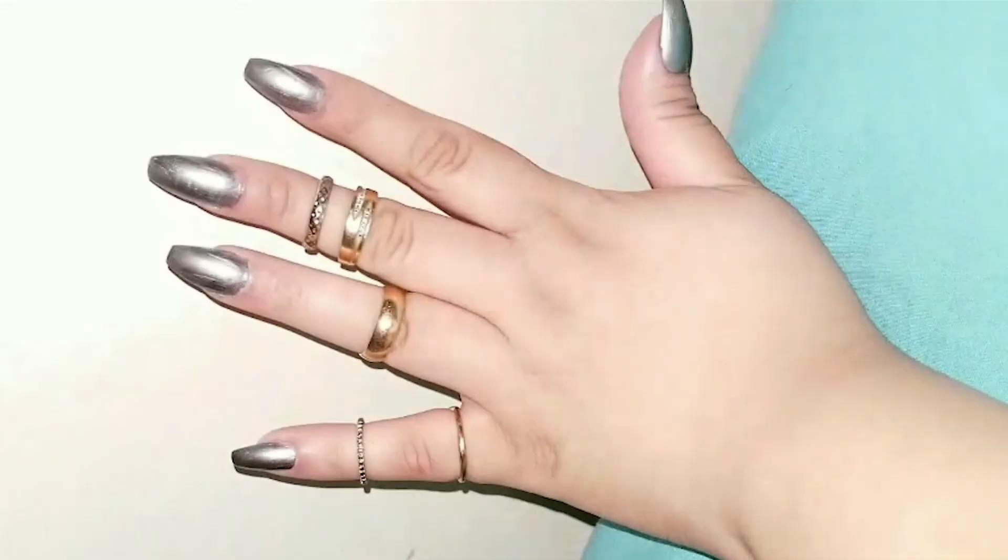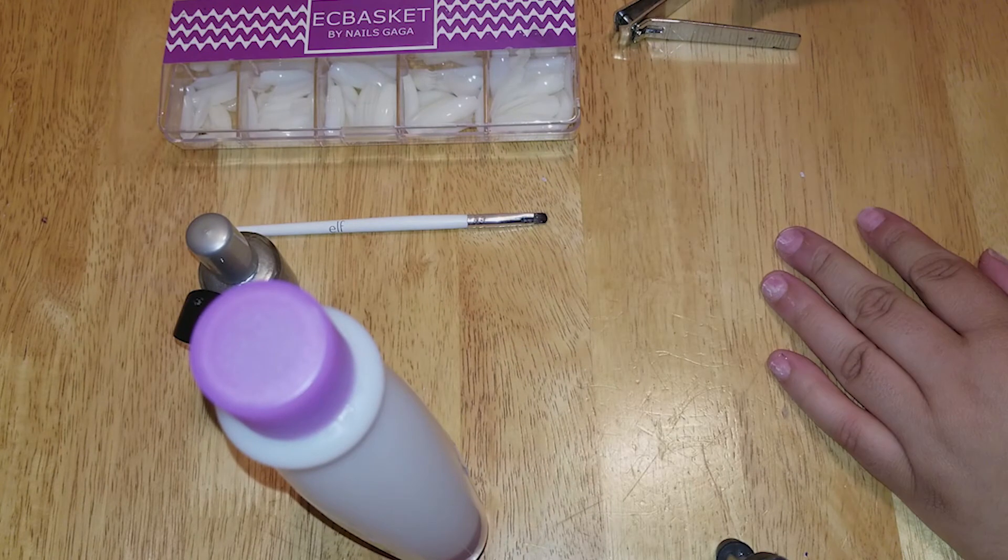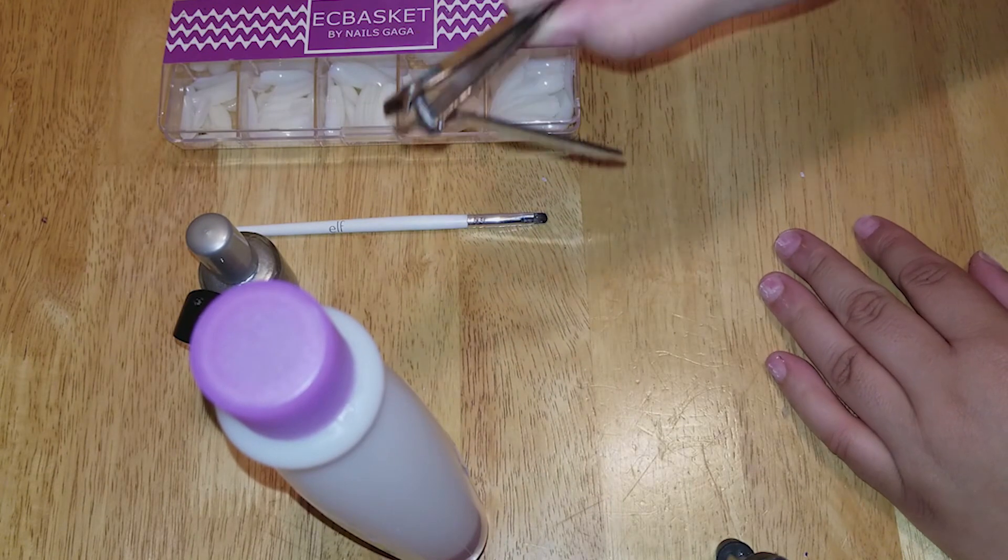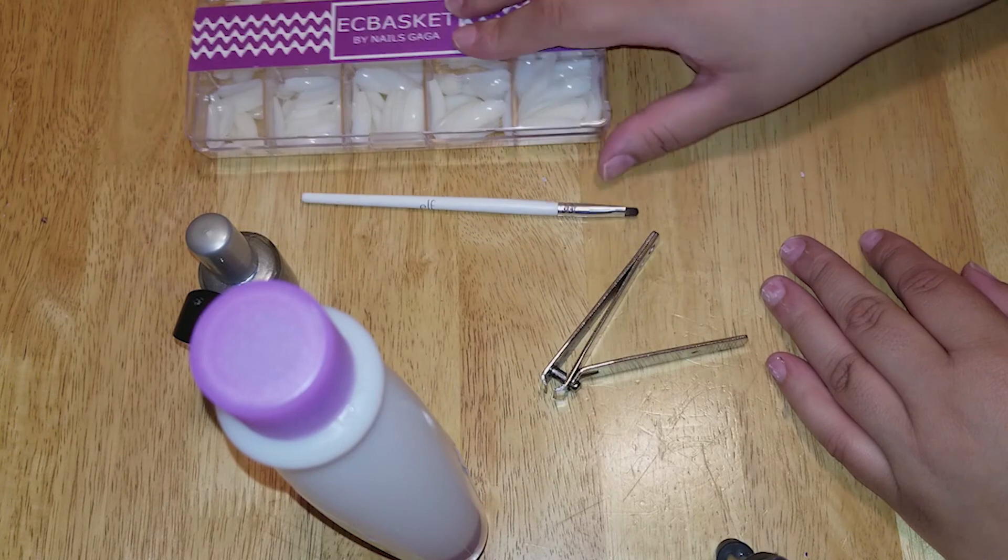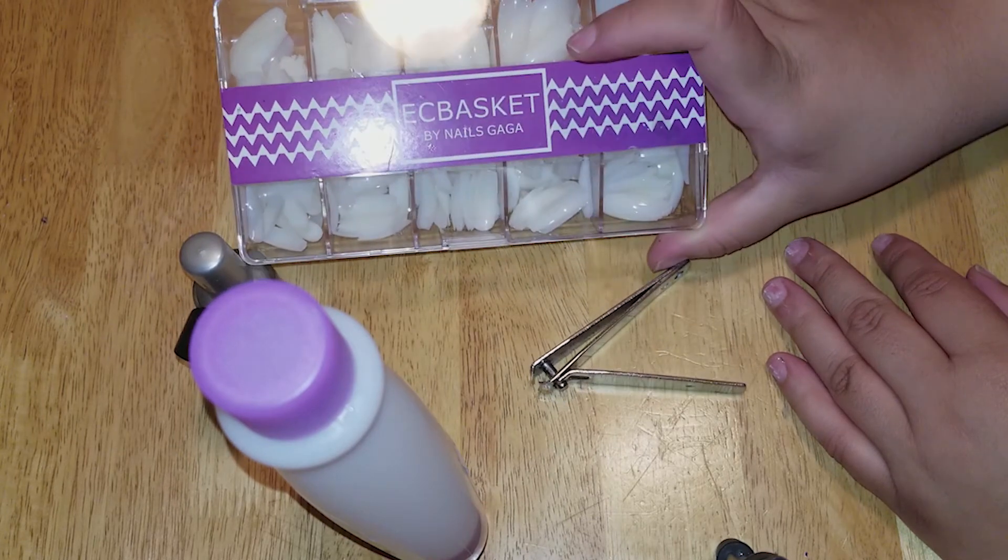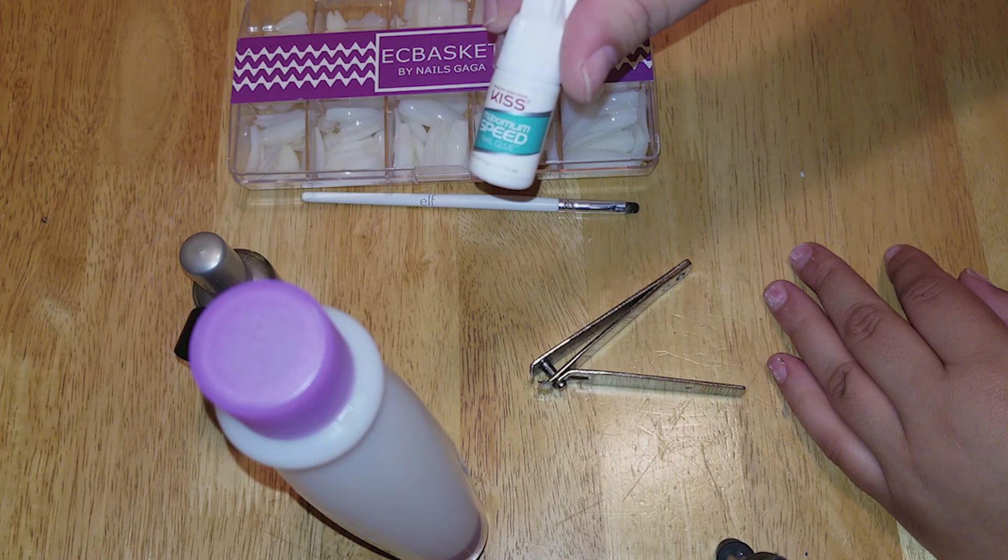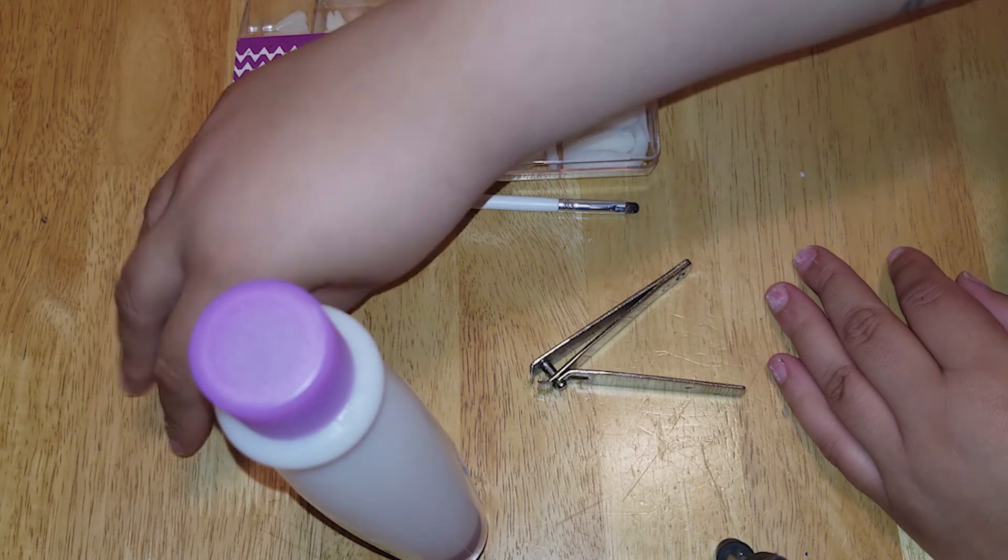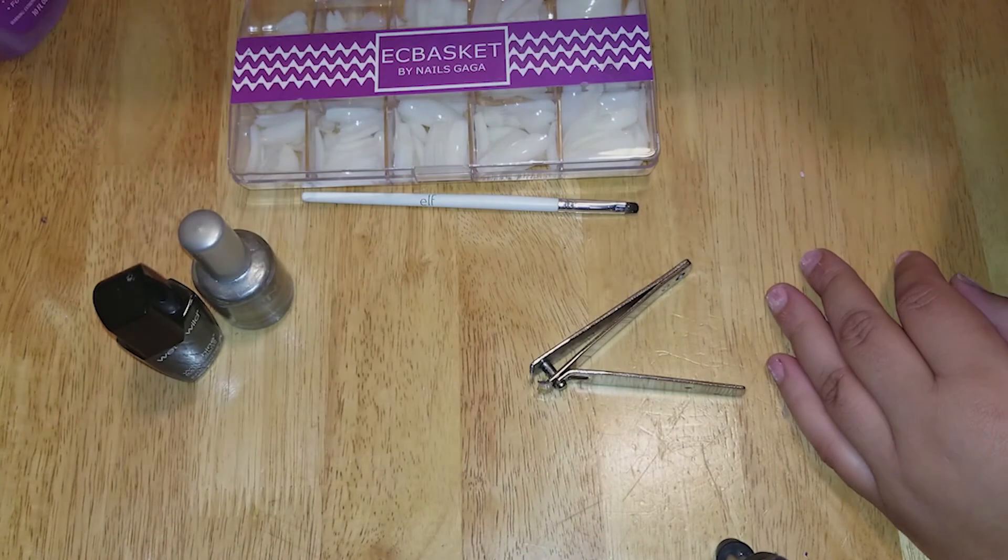Hey guys, welcome back to my channel. Today's video is going to be a tutorial on how to get these super sexy press-ons that can last you up to three weeks. All you're going to need is some nail clippers, a brush to clean up your nail polish, some nails (these are the Easy Baskets from Amazon), the Kiss Maximum Speed glue, any nail polish of your color, and some nail polish remover.